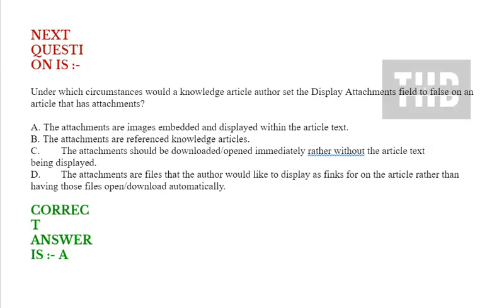Next question: Under which circumstances would a knowledge article author set the display attachments field to false on an article that has attachments? Option A: The attachments are images embedded and displayed within the article text. Option B: The attachments are referenced knowledge articles. Option C: The attachments should be downloaded and opened immediately rather than the article text being displayed. Option D: The attachments are files that the author would like to display as links on the article rather than having those files open or download automatically. Correct answer is Option A.